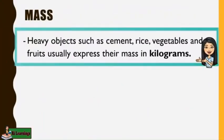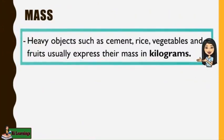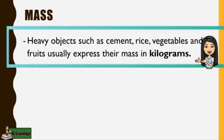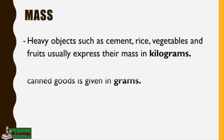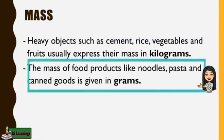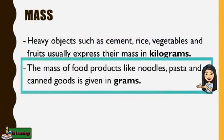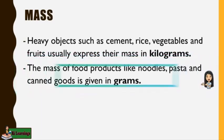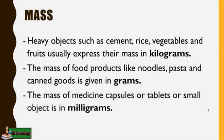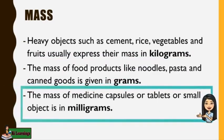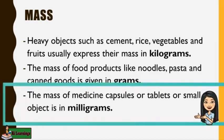Heavy objects such as cement, rice, vegetables, and fruits usually express their mass in kilograms, while the mass of food products like noodles, pasta, and canned goods is given in grams. On the other hand, the mass of medicine, capsules, or tablets, or small objects is in milligrams.